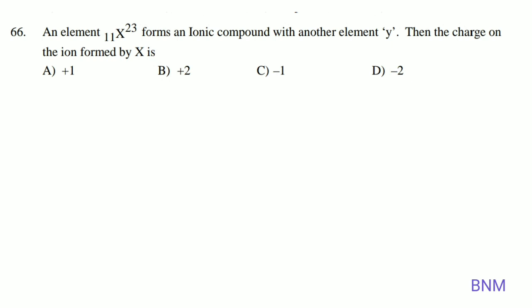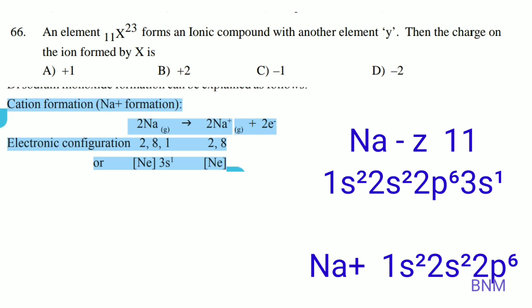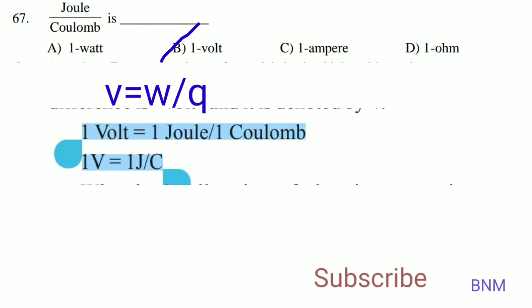An element X with atomic number 11 forms an ionic compound with another element Y. The atomic number 11 is sodium. Sodium loses one electron to achieve the octet valence configuration of neon (2, 8), so the charge on the ion formed by X is +1. Additionally, joule per coulomb is the unit of voltage: 1 joule per coulomb equals 1 volt, from the formula V equals W divided by Q. The right answer is B.